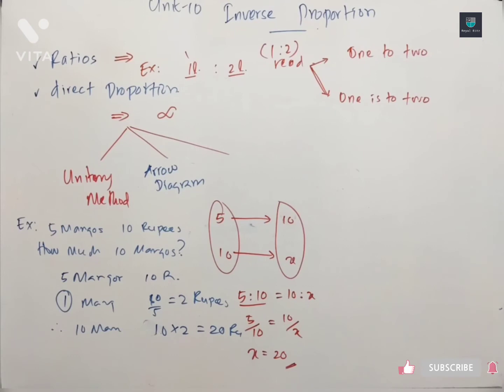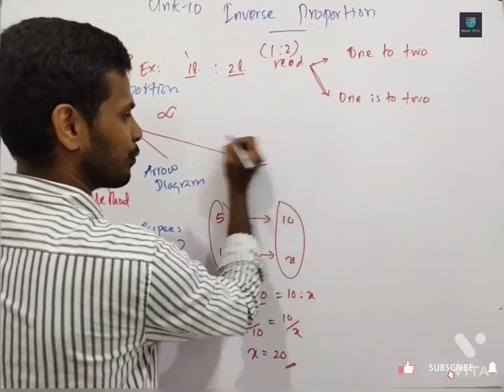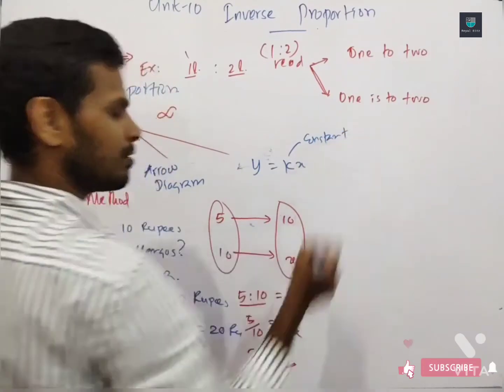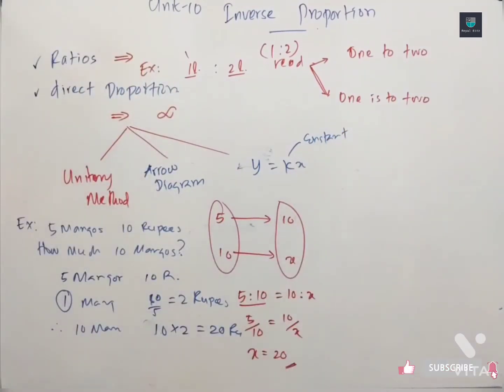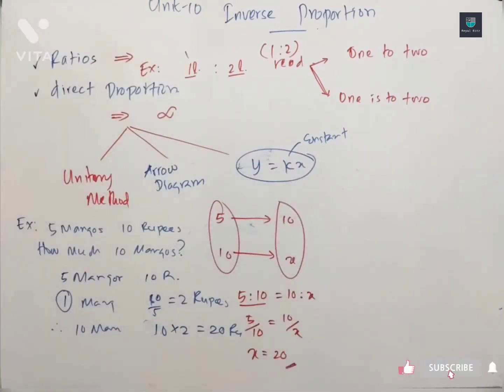And third, Fraction. Five over ten into ten. We are introducing the constant. Do you remember constant? Algebraic symbols, constant. For example, y is equal to kx. This is constant. This is the third method.